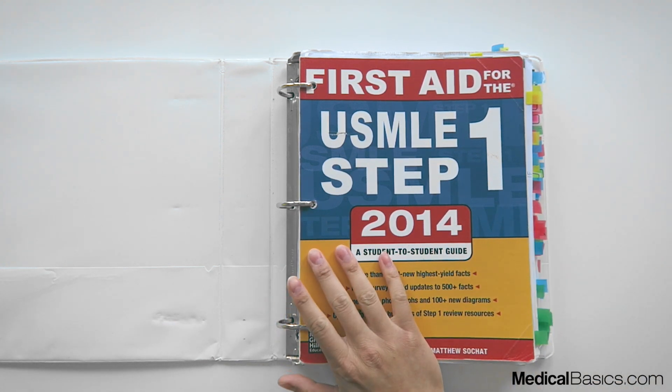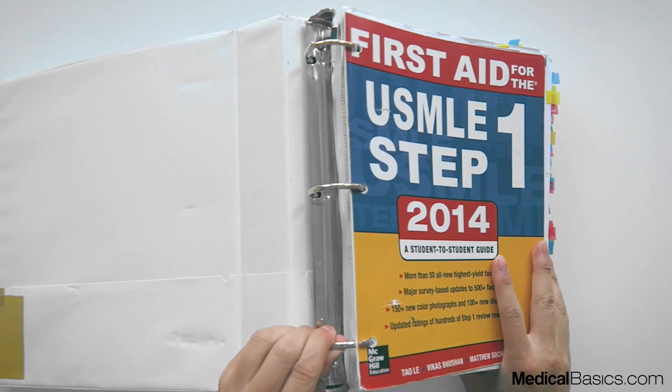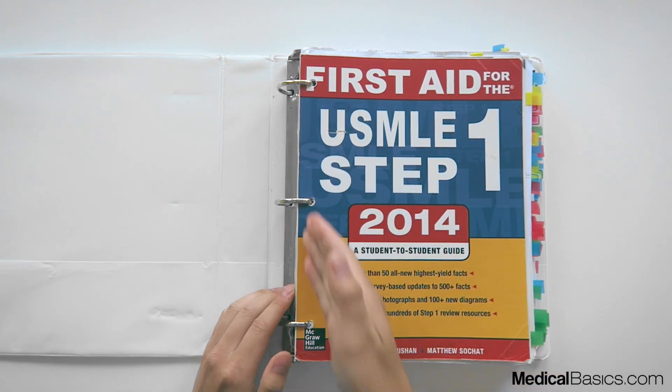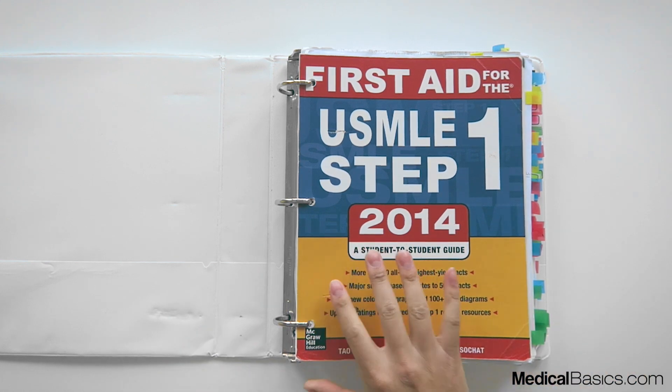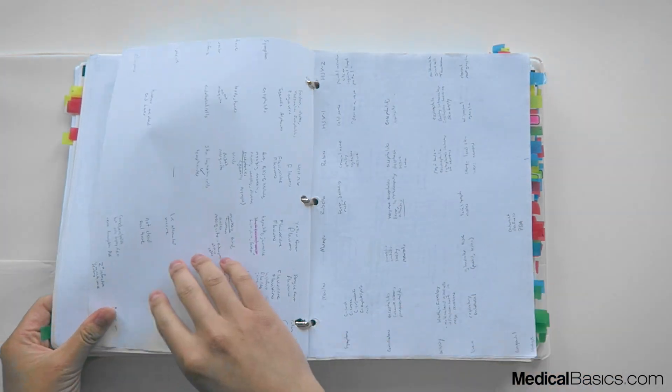So the first thing that I did is I took out the binding and put it in a binder. You can see here on the side it's just in a binder. I went to Kinko's and asked them to just take off the binding and I hole punched everything and put it in this binder. The good thing about it was that I could take notes.